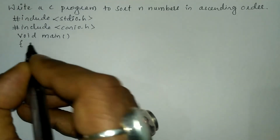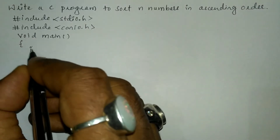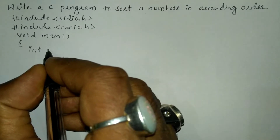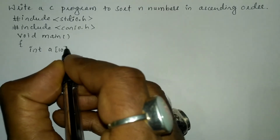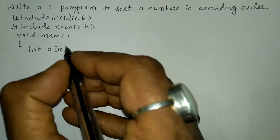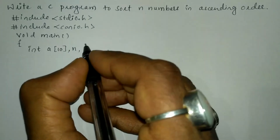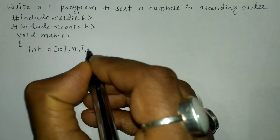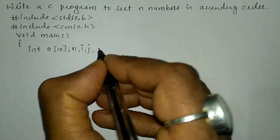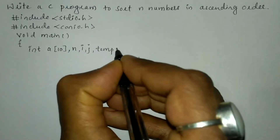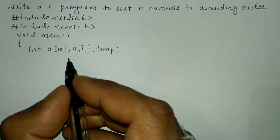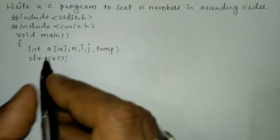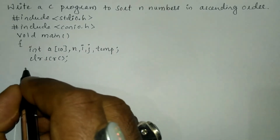We'll write void main with a curly open brace. Now I'm going to declare variables of type integer: an array of size 10, n for the number of elements, i and j as subscripts, and one more variable called temp as a temporary variable.